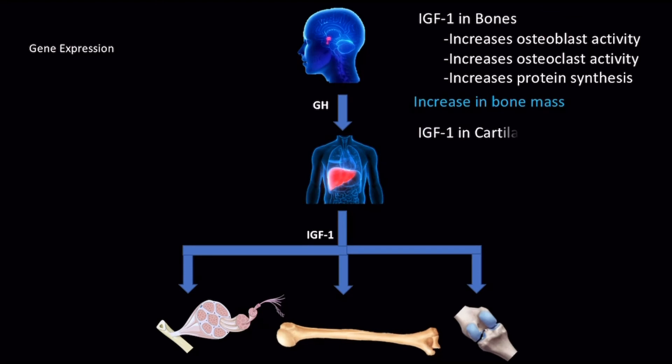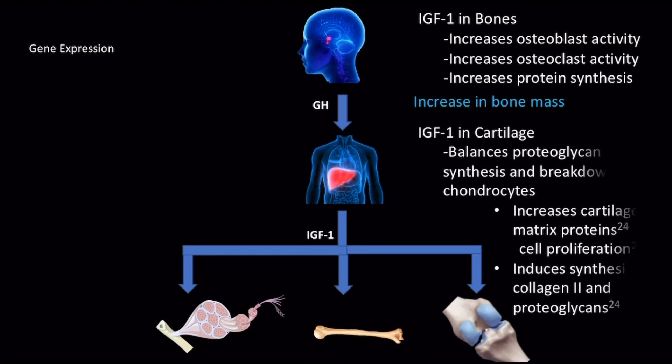In cartilage, IGF-1 works in a very similar manner as it does in bone. This makes sense because cartilage in bone are derived from similar tissues that consist of somewhat similar cell types and collagen fibers.